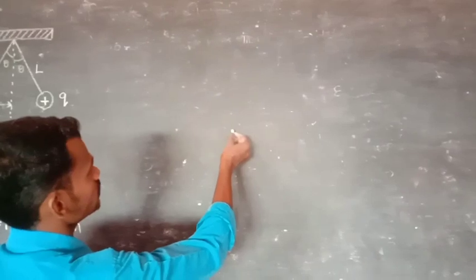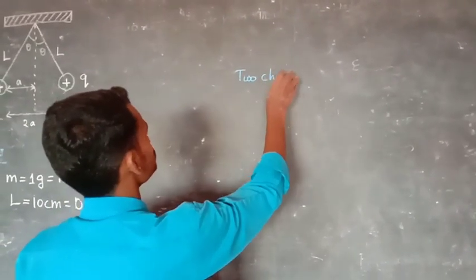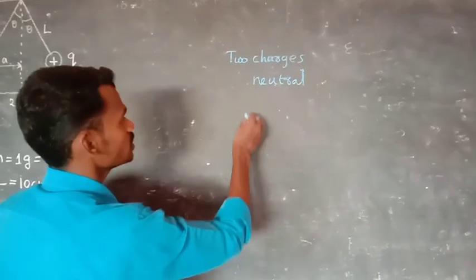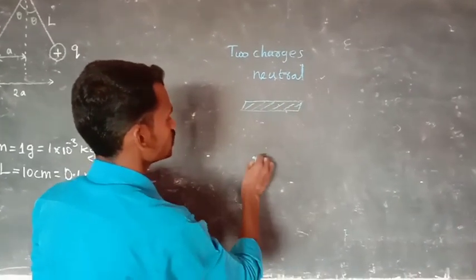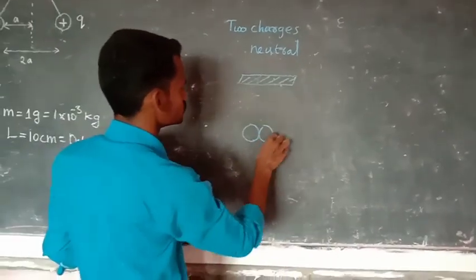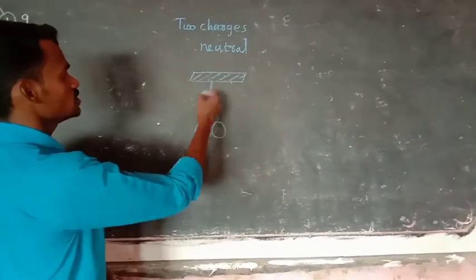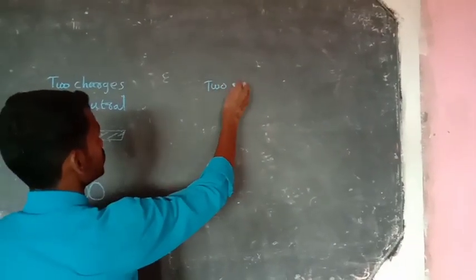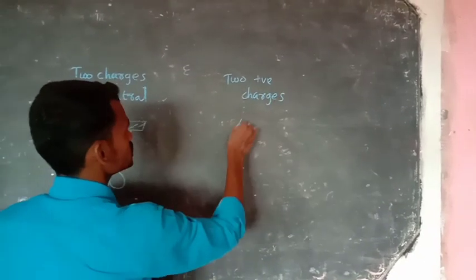For example, the two charges are neutral. Charges are equal.